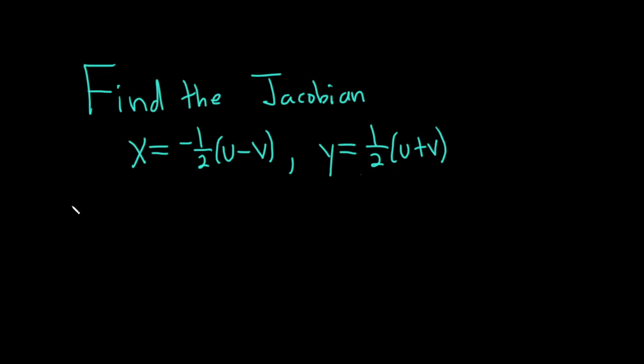So I'm going to start by writing down the formula and then we'll just use it. The Jacobian of x and y with respect to u and v can be memorized with a very easy determinant. In the first row, you just take the partials of x with respect to u and then with respect to v.